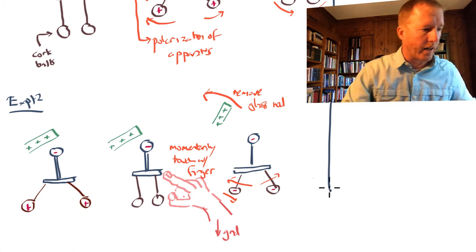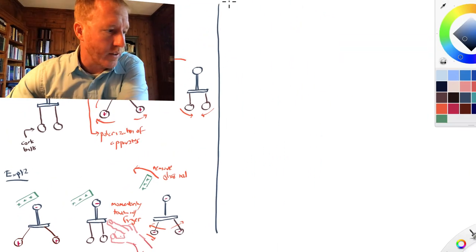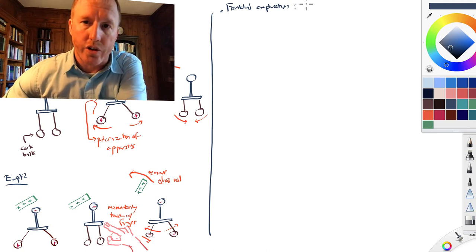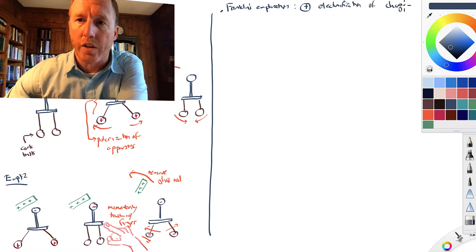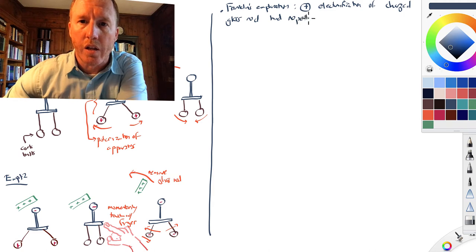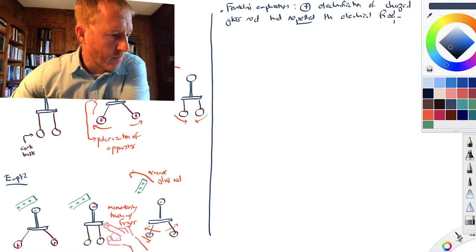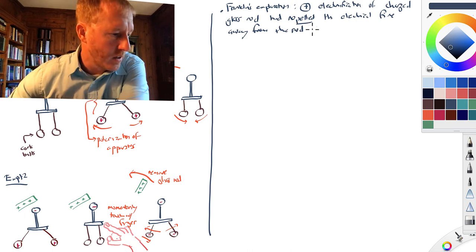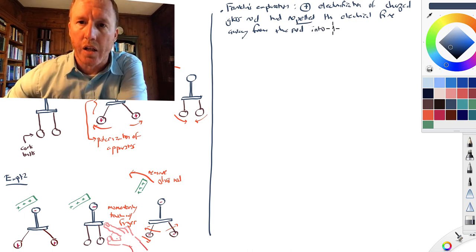So those are the first two experiments he carries out. Franklin's explanation is that the positive electrification of the charged glass rod had repelled the electrical fire — as he would call it — away from itself, away from the charged rod, into the opposite end of what we'll call the electrometer.